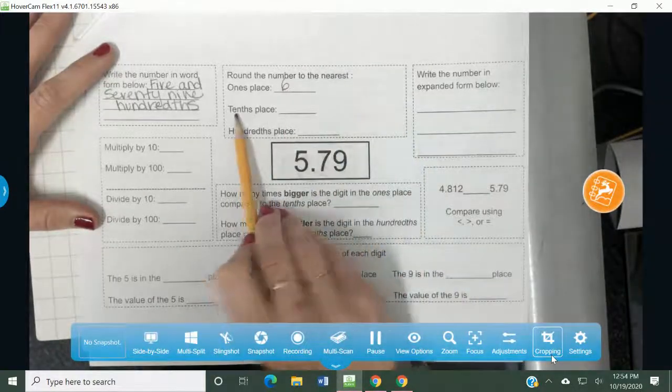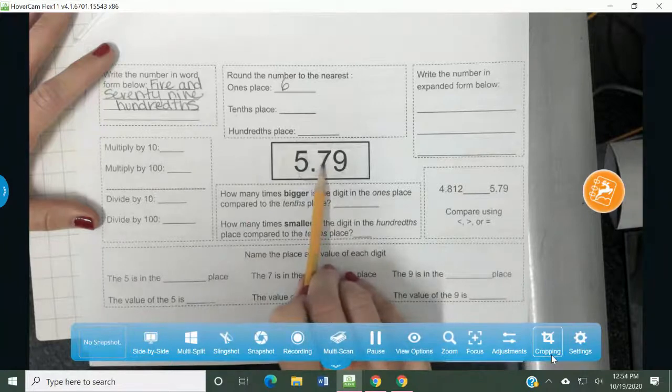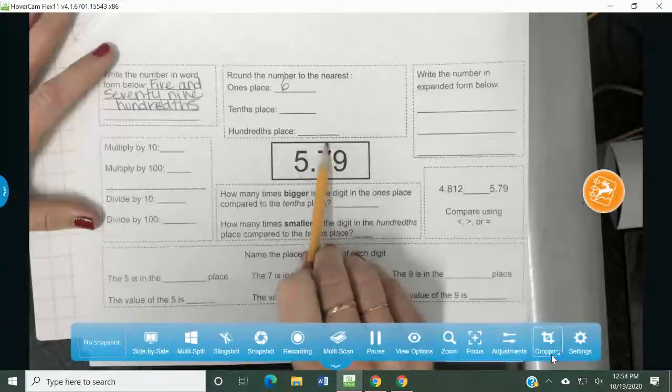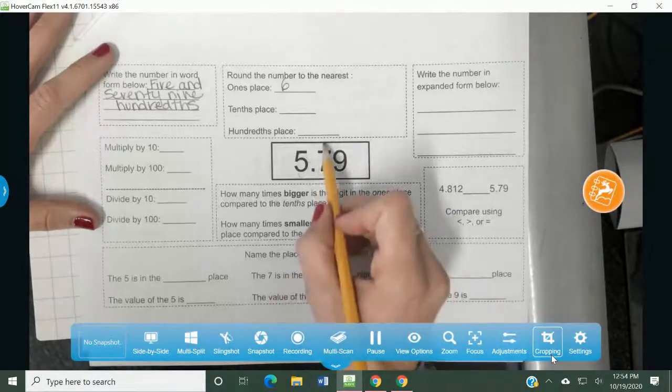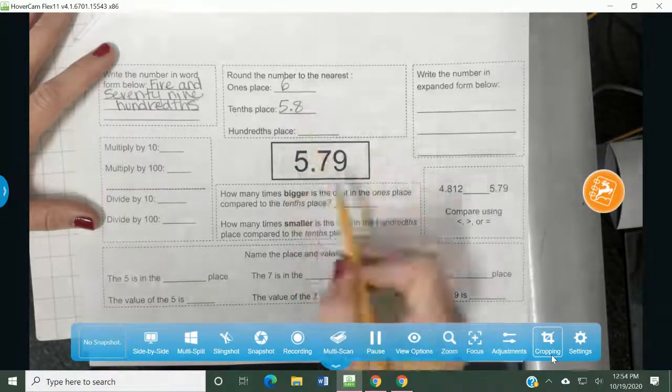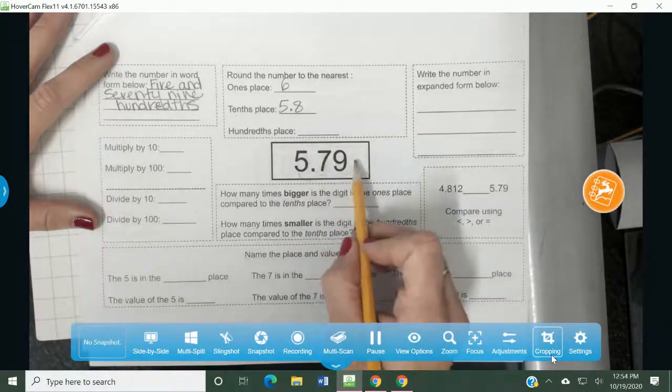Now round the tenths place. The seven is sitting in the tenths place. Let's look over to the right. To the right of it is a nine. That's five or more, so we knock on the door and the seven becomes an eight. We need to still include the five in the decimal and then this change to an eight. Everything to the right goes away.